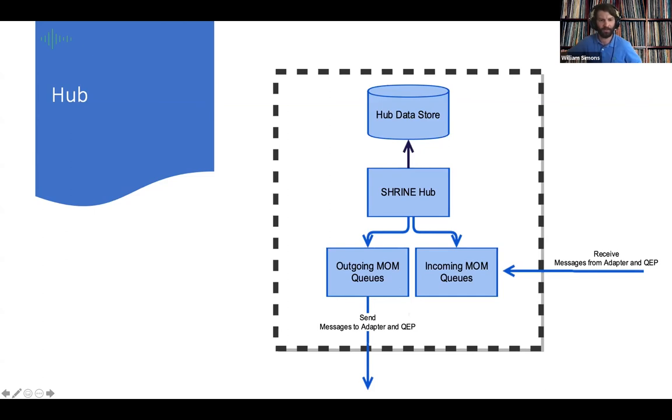This queuing system, by the way, in combination with polling, long polling requests is what enables the asynchronous behavior that Doug was referring to earlier, whereby sites can return their results and the user can view those results as they're coming in. And we don't have to wait for all of the sites to process the query before you can see the results of some of the sites.